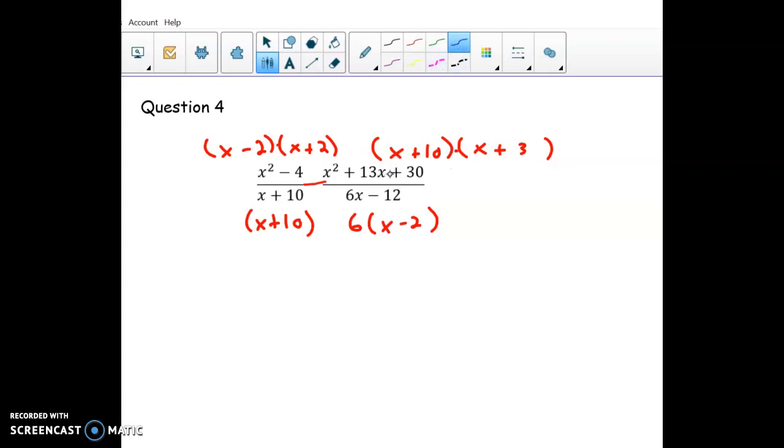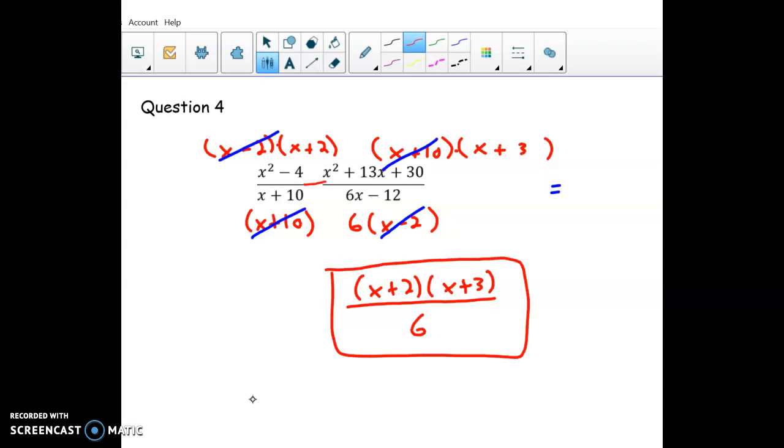All right, now we just take out our wrecking ball and smash everything that matches. So there, those match—matching x minus 2s—and then I think that's it. So what do we have left? Up top we have factor x plus 2 times x plus 3. And again, you don't have to FOIL that; you can just leave it in factored form. The only thing left in the denominator is a 6. All right, and that should do it.